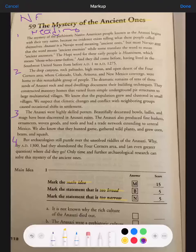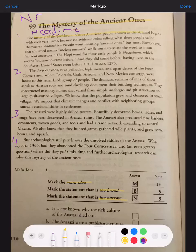The mystery of the prehistoric Native American people known as the Anasazi begins with their very name, because no evidence exists telling what these people called themselves. Please highlight here. Highlight Anasazi is a Navajo word meaning ancient ones.